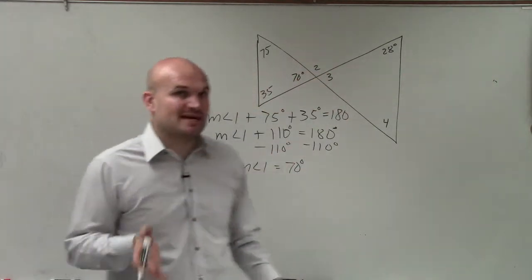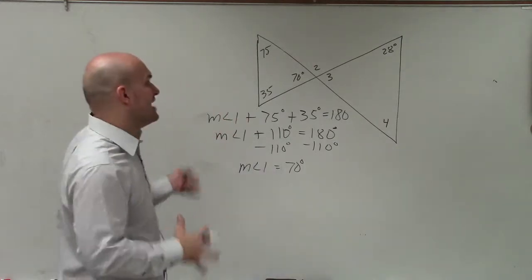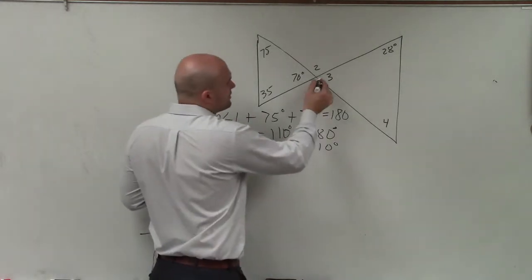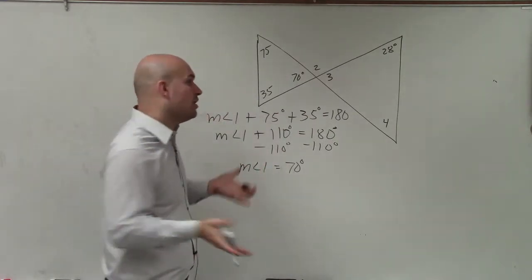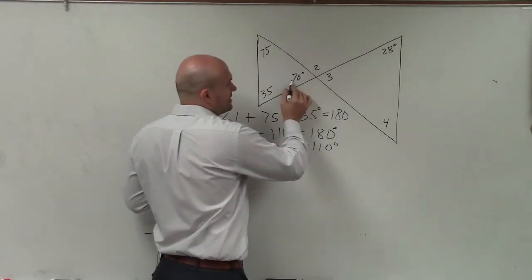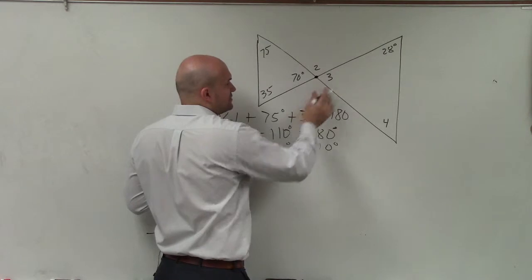Now there's a couple angle relationships I can use in addition to my angle sum theorem. Remember, when you have intersecting lines, you have angle relationships. One, you can see that I have vertical angles, right? Angles that share a vertex but do not share sides.